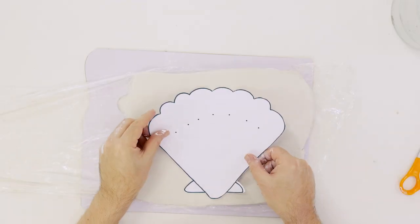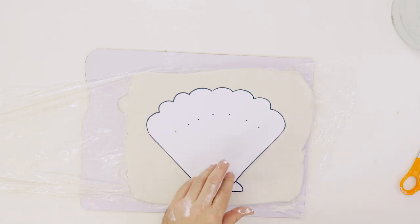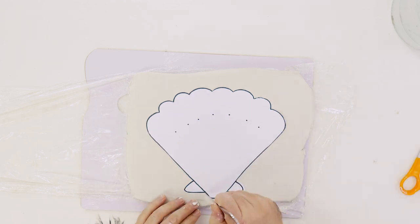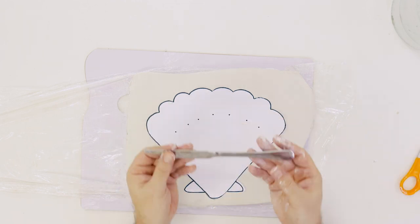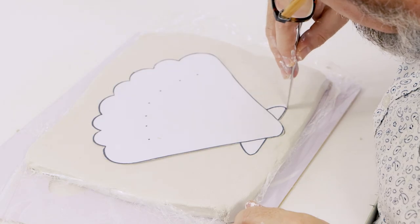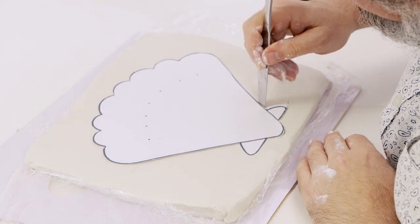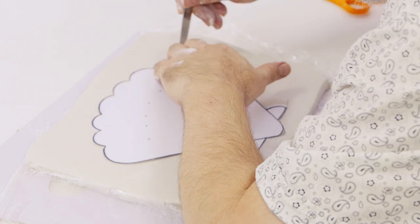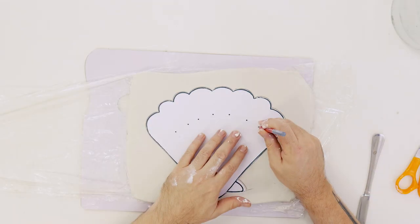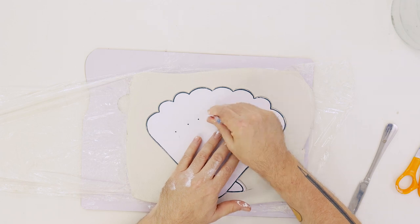Peel back the cling film and lay the profile cut shell shape onto the damp clay. Use the tip of the butter knife to transfer the outline onto the clay. There is a series of dots on the printout that mark where the walls on the palette will lie. These can be transferred with the point of a pencil.